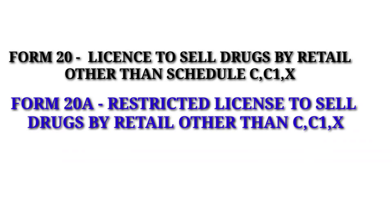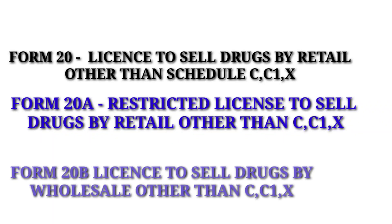Coming to the next form — Form Number 20A. This is the license for a restricted license to sell drugs by retail, other than Schedule C, C1, and X. Coming to Form 20B: this form is used to issue a license to sell drugs by wholesale, other than Schedule C, C1, and X.